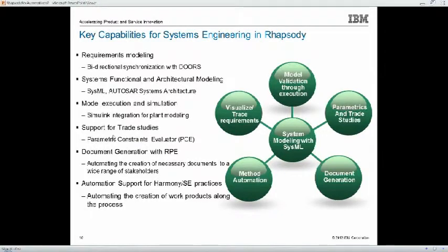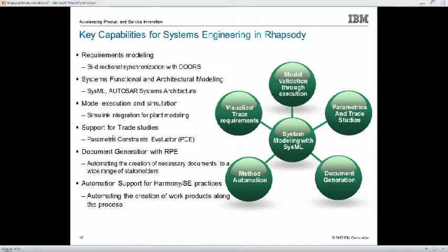Taking a look at the key capabilities for systems engineering in Rhapsody, we have model validation through execution. This is important. As we think about traditional systems engineering methods, they're largely document-driven, pencil-and-paper-based approaches, and it's very difficult to validate these things. By transforming our organizations from a document-centric to a model-driven organization, we're able to bring those specifications to life and enable model execution, which gives us the ability to perform validation and ensure that requirements are being specified properly. We apply the systems modeling solution, which is a standard notation often referred to as SysML, to achieve this.